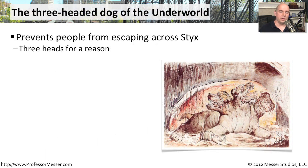The name Kerberos comes from Greek mythology. The word Kerberos, or Cerberus, is the three-headed dog of the underworld. It prevented people from escaping across the River Styx. It was the guardian. And it had three heads, and those three heads are pretty important when we start looking at the Kerberos protocol itself.